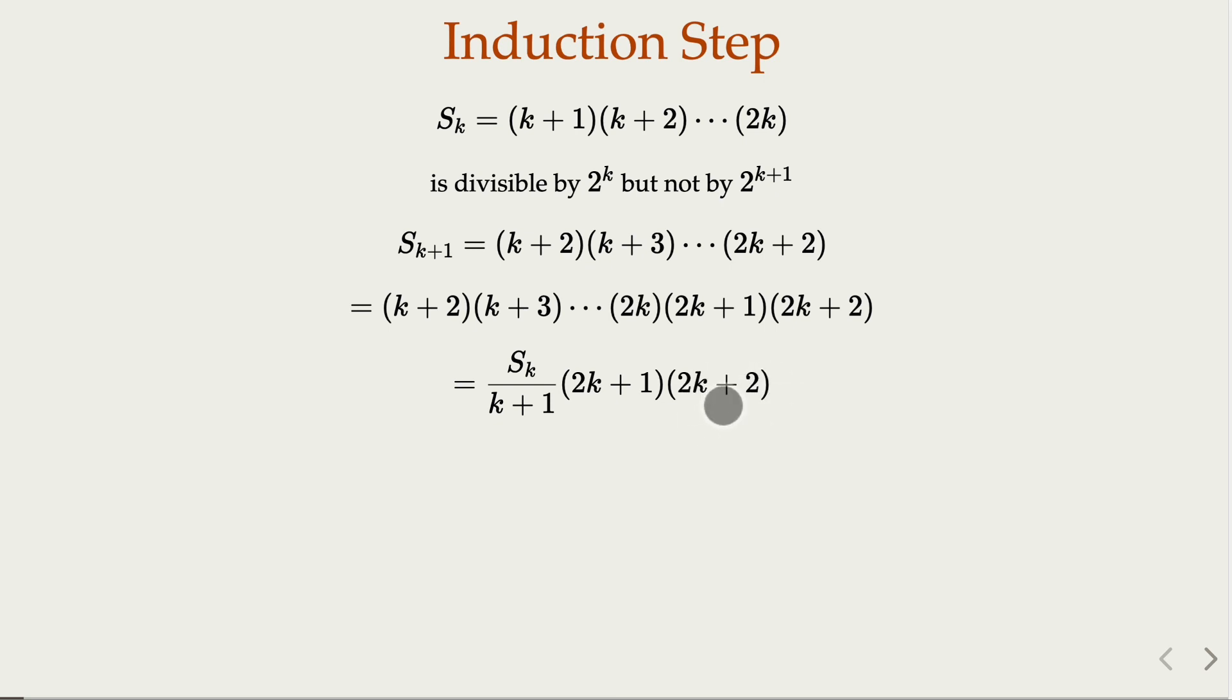So you have 2, and 2k plus 1 is always an odd number. So what you have is Sk plus 1 equals Sk times 2 and an odd number.